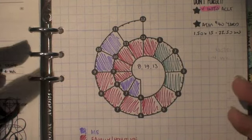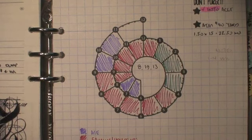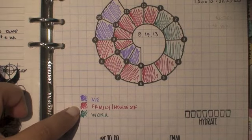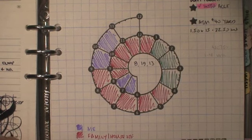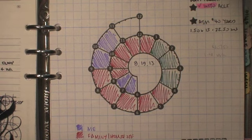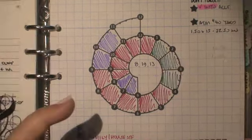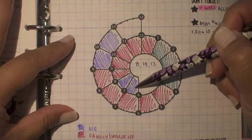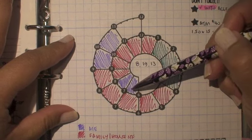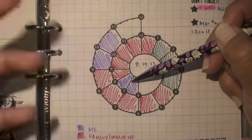Some people have their Chronodex or Spiraledex set up differently, but I like to keep mine simple and confined. Here's my color coding key: purple is for me, red is for family or house things, and green is for work. Today I'm working from home — it's my kids' last week of school and I wanted to spend as much time with them as possible. From six to eight o'clock this morning was me time: yoga, pilates, a shower, doing my hair — just things to get ready and kick-started in the morning.